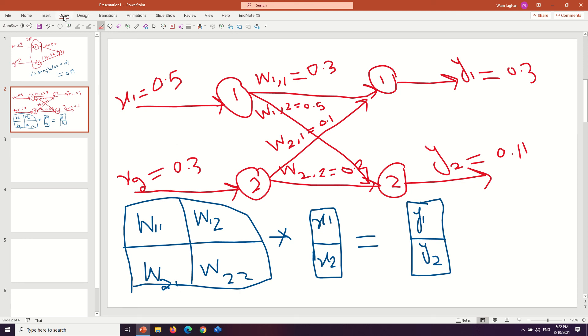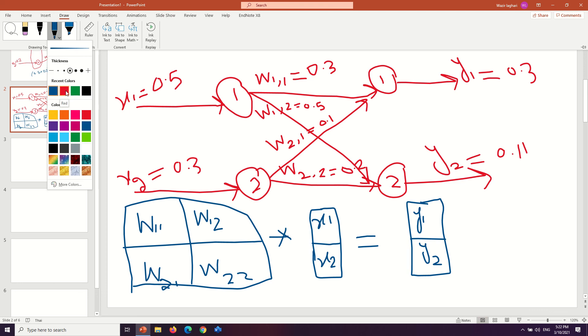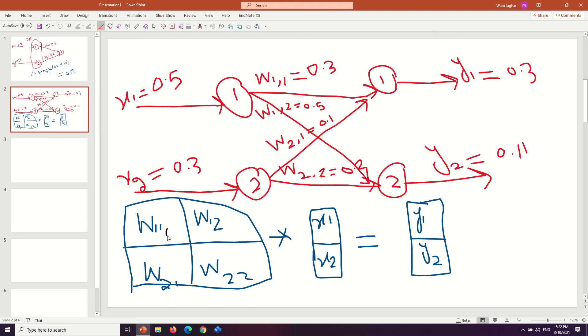Now you put these values and multiply with inputs and you get a resultant output. Suppose this is our value: w1,1 is 0.3 and w1,2 is 0.5. And w2,1 is 0.1 and w2,2 is 0.2. Similarly x1 is 0.5. So here is 0.3. So multiply these and you get 0.3 here and 0.1 here.